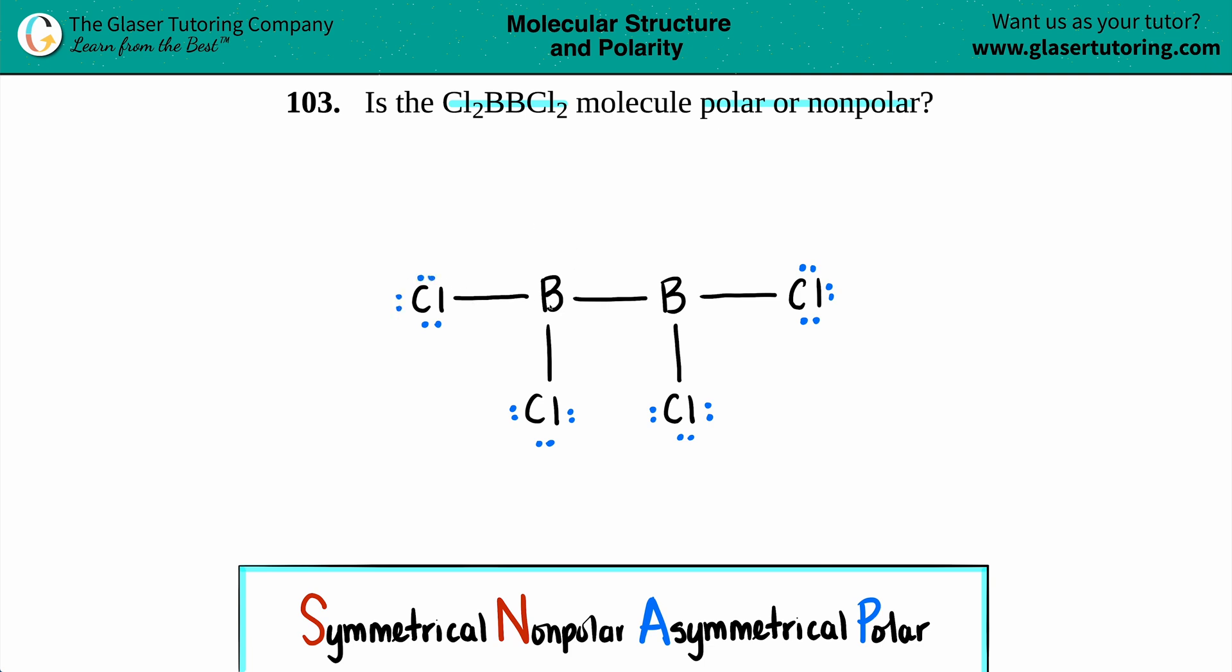And now for boron, keep in mind that boron has three valence electrons. And for this boron, it had one, two, three to make the bond. So there's no extra. So there's no lone pairs. And for this boron, it's the same thing. It used one, two, three electrons to make those single bonds. Boron only has three valence electrons. So no need to draw any lone pairs here. So here's your molecule.